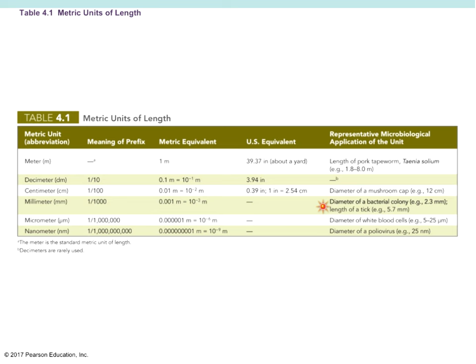We're getting very small. Once we get to the micrometer, a micrometer is one one-millionth of a meter — there'd be a million of those tick marks on a yardstick, but we can't see them with our naked eye. Things we measure in micrometers include cells, bacteria, and white blood cells. At a nanometer, things are very, very small — a nanometer is about the diameter of the polio virus.